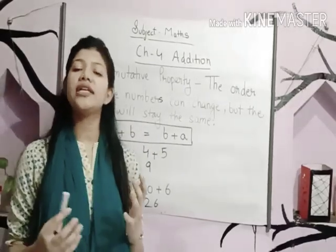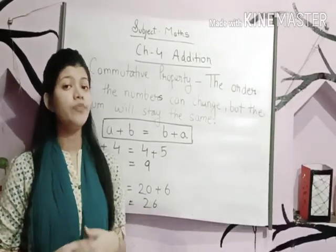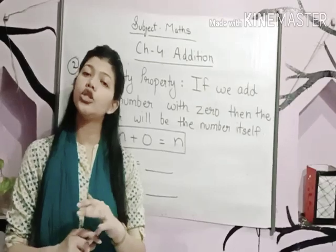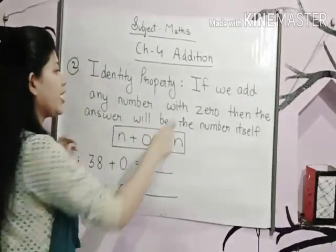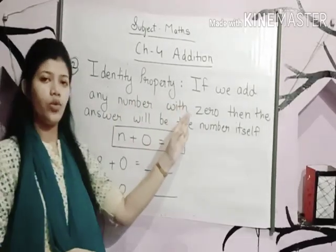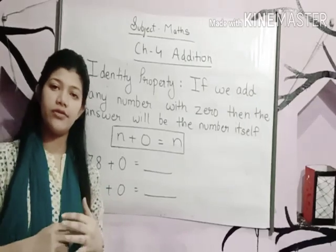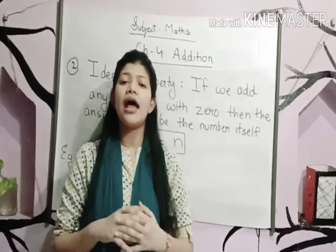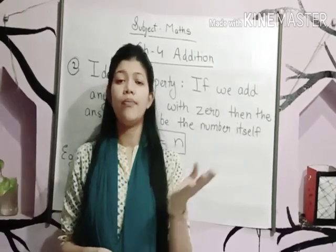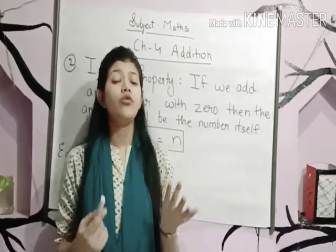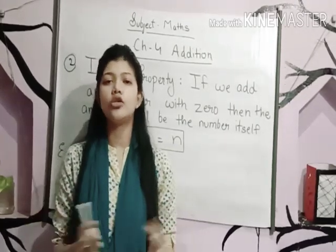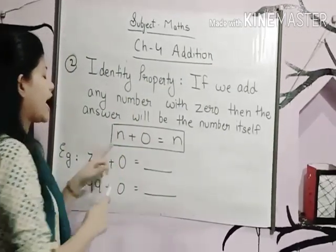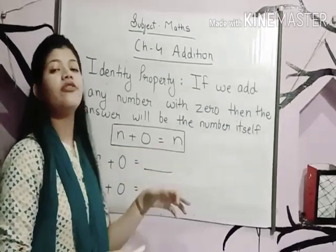I hope you have understood commutative property. Now let's discuss the identity property. Identity property is also known as Zero Property. If we add any number with 0, then the answer will be the number itself. For example, if I gave you 10 chocolates and asked you to give 5 to your friend but you didn't give any, then the same 10 chocolates remain with you.